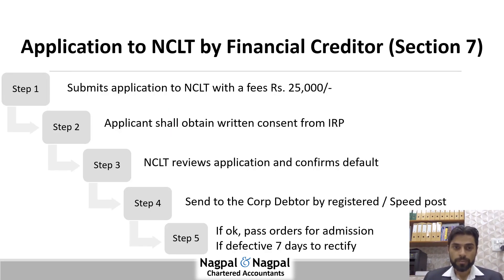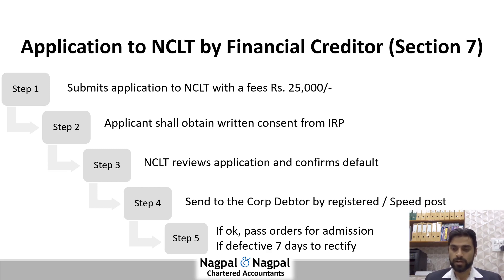Let us talk about the application to NCLT by a financial creditor under Section 7. A financial creditor submits an application along with a fee of ₹25,000 and shall obtain written consent from the person willing to act as IRP. NCLT reviews the application and confirms the default. If everything is in order, NCLT will accept the application and send a copy to the corporate debtor. Before acceptance, it will issue a show cause notice to the corporate debtor to provide the reason why the application should not be accepted. In case the application is defective, it gives seven days to the applicant to rectify the defects.